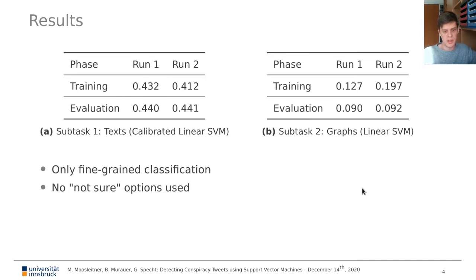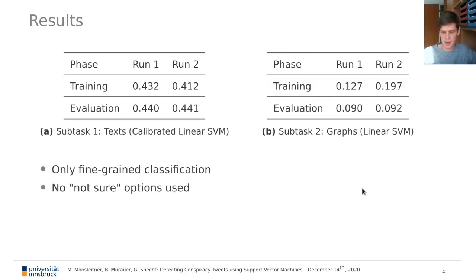This we attribute to our lack of knowledge in graph classification in general. In general we always used fine-grained classification tasks, so we had all the classes as possible output classes and never used the 'not sure' option that was described by the task organizers.